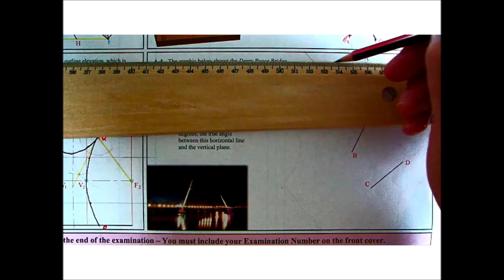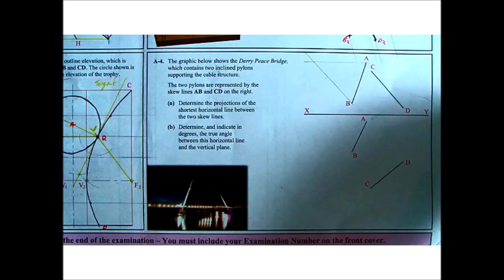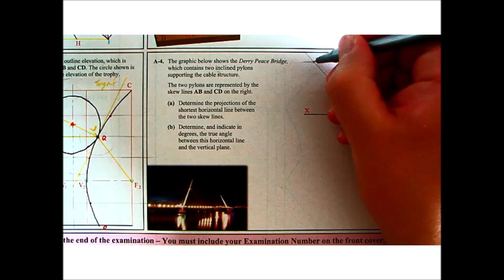Now what we need to make that lamina is a line that's parallel to the XY. So in this case, from A draw line parallel to XY, I'll give you a new point there and we'll call that point E.